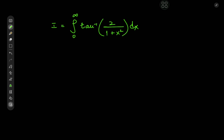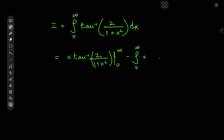Before getting into the complex analysis bit, we could do something quite simple. Notice that we have an inverse tangent, and differentiating inverse tangents yields rational functions, so we could do some integration by parts first. On integration by parts we have x times inverse tangent of 2 divided by 1 plus x squared, with the limits being 0 and infinity, minus the integral from 0 to infinity of x times the derivative of the inverse tangent, which is 1 divided by 1 plus 4 divided by 1 plus x squared, squared.